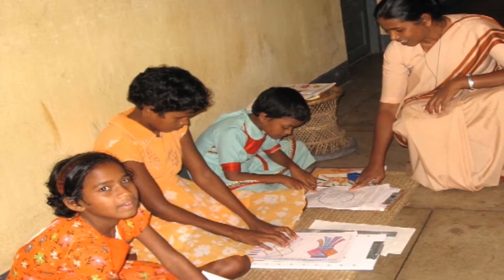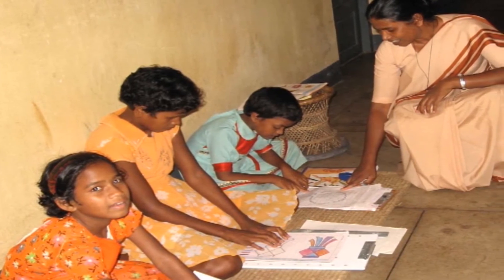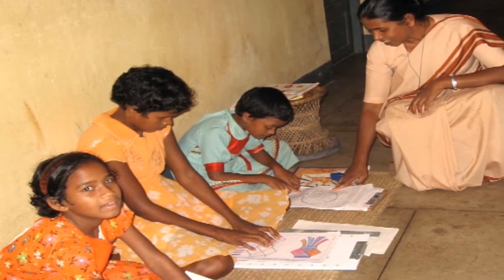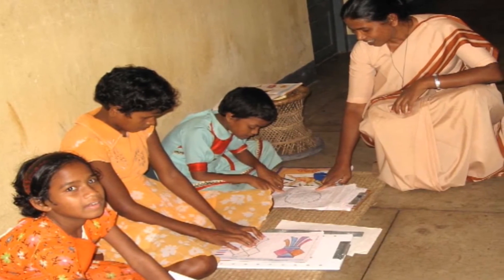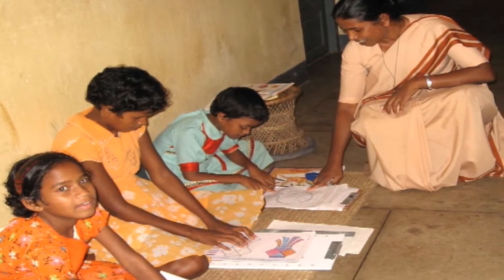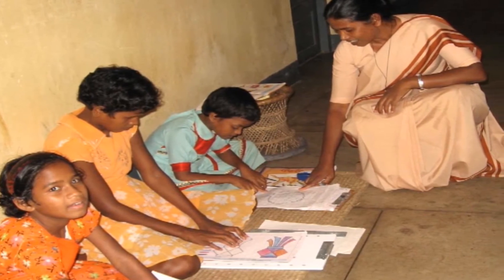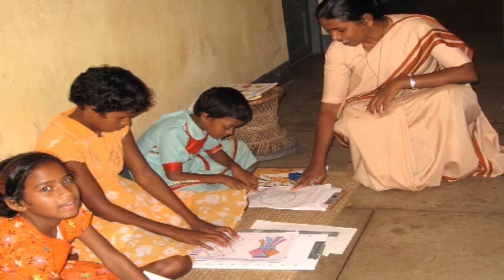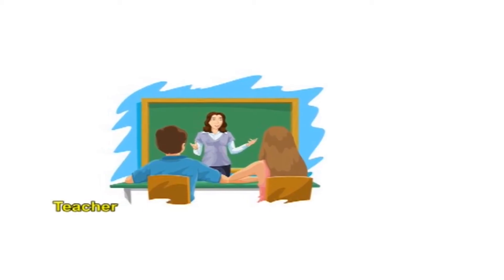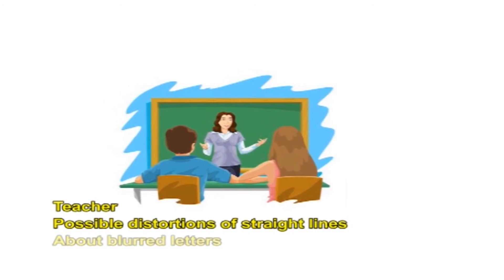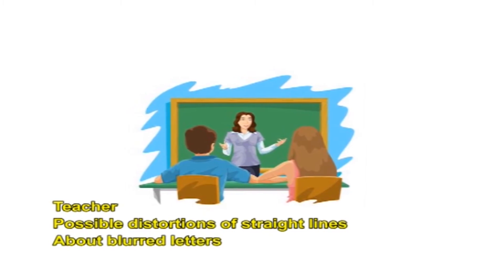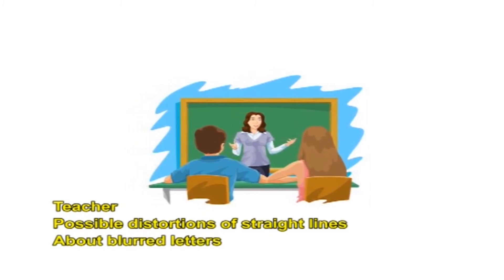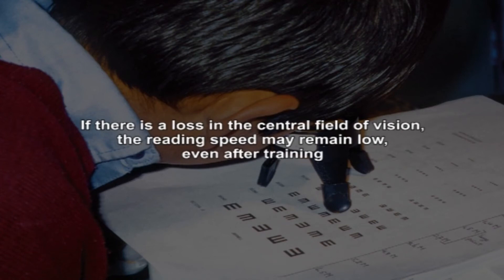Testing comprehension involves the teacher preparing questions about the content of the passage beforehand, with the child's answers recorded. If the child uses all energy in reading and does not remember the content, a second reading may be allowed. The teacher can also ask the child about possible distortions of straight lines, blurred letters, or disappearing letters to understand the quality of the central visual field for reading. If there is a loss in the central field of vision, reading speed may remain low even after training.